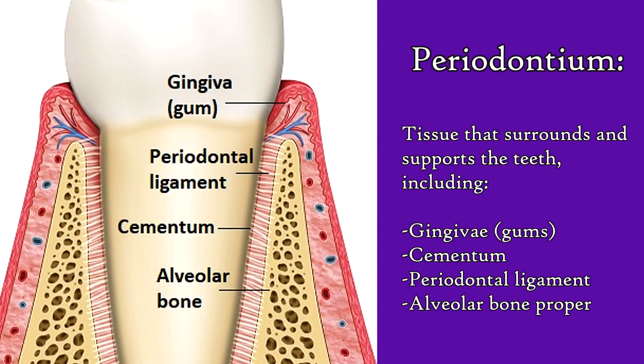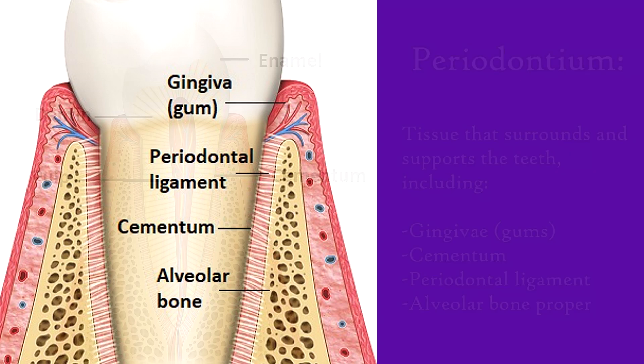Cementum is also one of the four tissues that make up the periodontium, which surrounds and supports the teeth. The other three being the gingiva or gums, the periodontal ligament, and the alveolar bone proper.